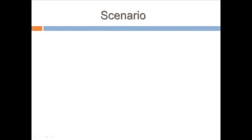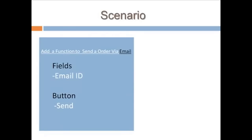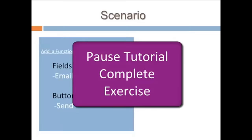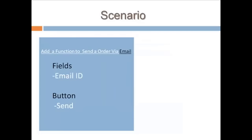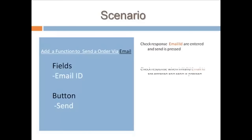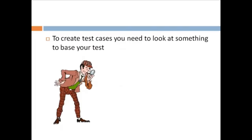Now consider a scenario where the client requests adding a 'send order via email' functionality to Flight Reservation. A few test cases for this requirement would be: check response when valid email ID is entered and send is pressed, check response when invalid email ID is entered and send is pressed, check response when email ID is empty and send is pressed. You may have realized that to create test cases, you need to look at something to base your test on — this is nothing but the test basis. This test basis could be the actual application under test (AUT), your experience, or most of the time, documents.